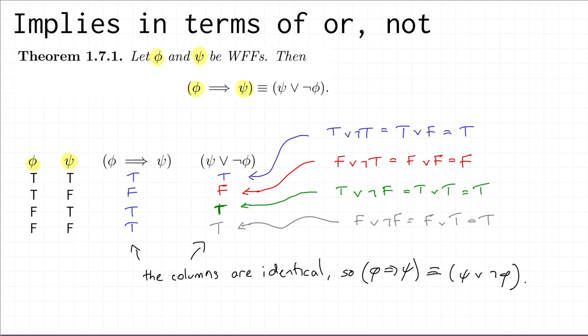Let's think about what this result is actually telling us now that we've proved it. It's telling us something interesting and useful, because it means that the connective implies is not really necessary — given any well-formed formula using our four connectives we can find a logically equivalent well-formed formula that doesn't use implies, that only uses AND, OR, and NOT. We'll return to this idea when we discuss adequacy in the next video, but this justifies what I was saying right at the start: we don't actually need all four connectives.